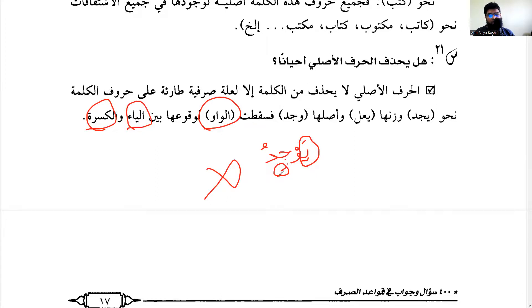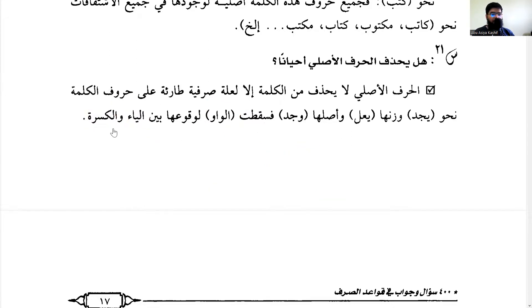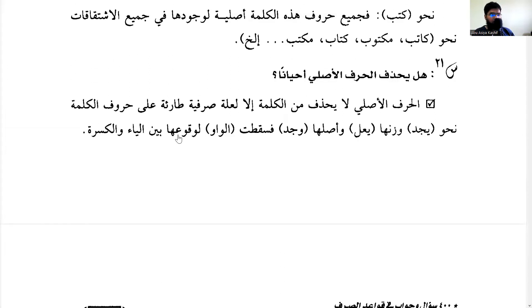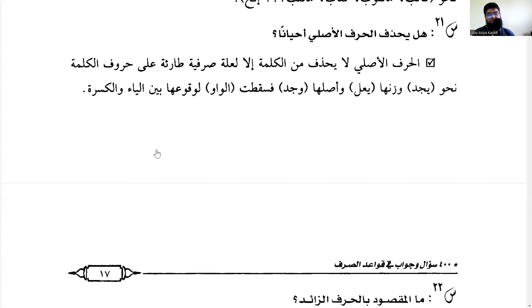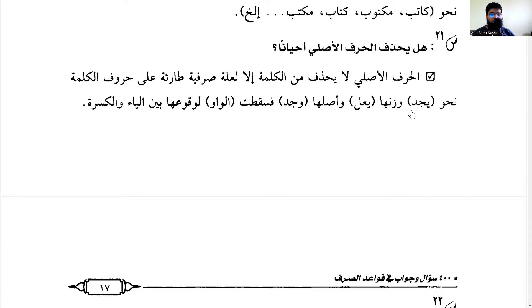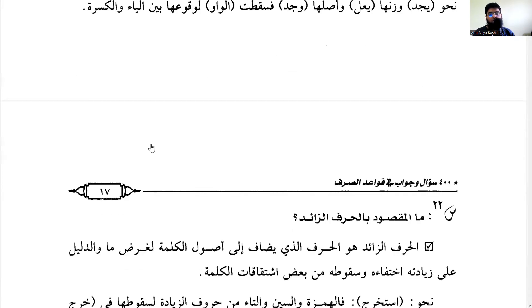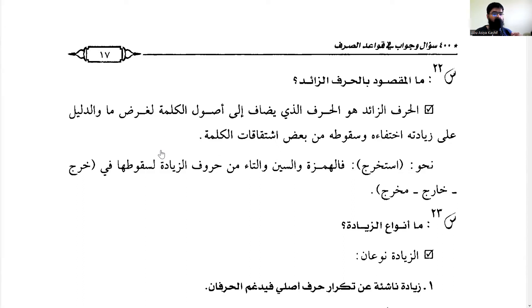WAW does not like YA, and WAW does not like Kasra — WAW likes Dhamma. So because it occurred between two enemies (بَيْنَ عَدُوَّيْن), the YA and the Kasra, the WAW was dropped. So yes, original root letters can drop, but only for a morphological reason with a cause. This is how you identify root letters — if one is dropped, you know the rule, and it becomes easier to find the root.